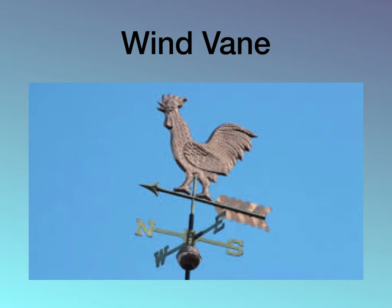This next weather tool is called a wind vane. You may have seen wind vanes in movies, cartoons, or you may even have one at home. A wind vane measures the direction that the wind is blowing. If we look closely at this picture of the wind vane, we can see that it has north, south, east, and west. So the wind vane tells us what direction the wind is blowing — is it blowing north, south, east, or west?